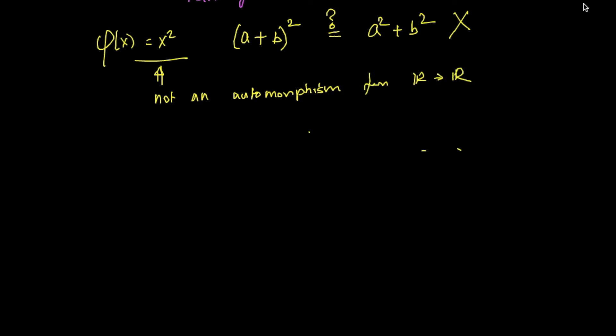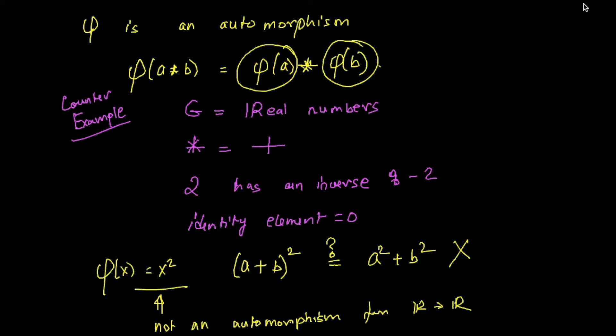Actually, an automorphism needs a little bit more - it needs to be a bijection. An automorphism is a bijection from a group to itself such that phi of A star B equals phi of A star phi of B. These are the type of maps which preserve the group structure, and when we are studying group theory, these are the maps we are very interested in.